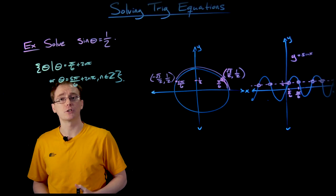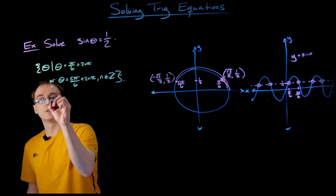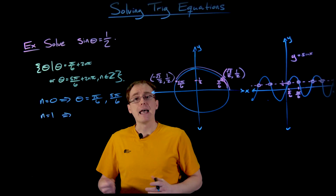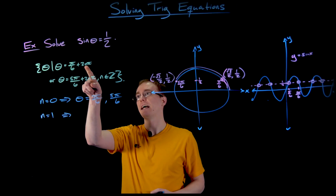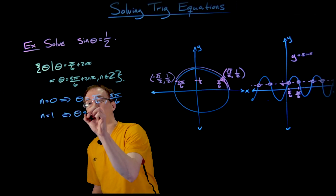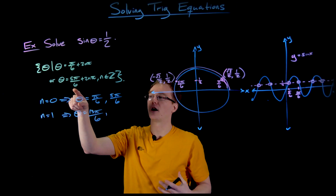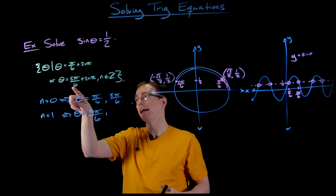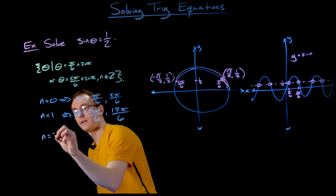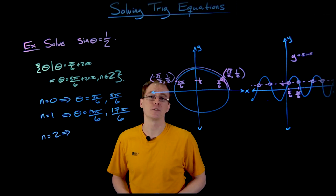The way we recover other solutions is by plugging in varying values of n. If n = 0, theta is either π/6 or 5π/6. If n = 1, we plug in n = 1 and get π/6 + 2π, which gives us 13π/6 for the second version of that first solution. We do the same thing for the second solution: adding 2π to 5π/6 gives us 17π/6. We can repeat this process for as long as we want or until we get the desired solutions we are looking for.